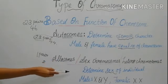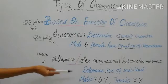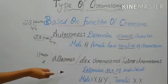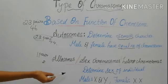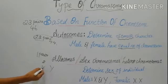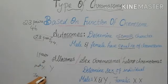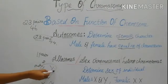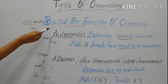Since these chromosomes are different from autosomes, they are also known as hetero chromosomes. In males, the two types of sex chromosomes are X and Y. In females, two X chromosomes are present. So in females the sex chromosomes are the same, while in males they are different. These are the types of chromosomes based on function.